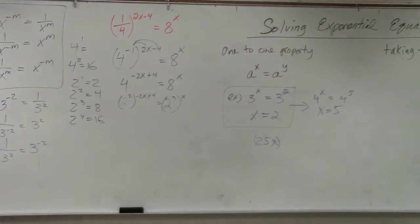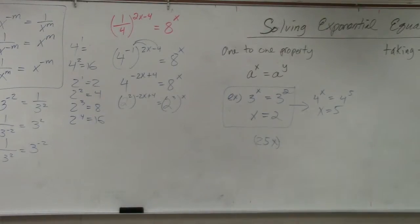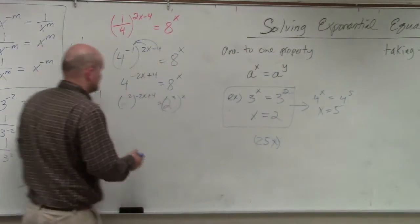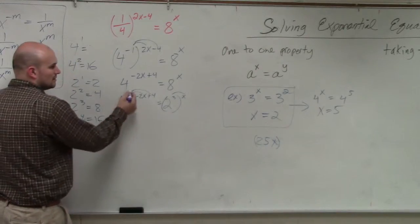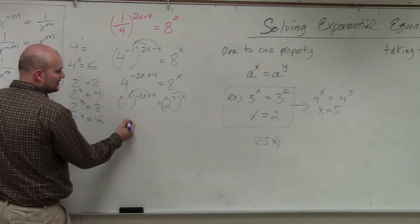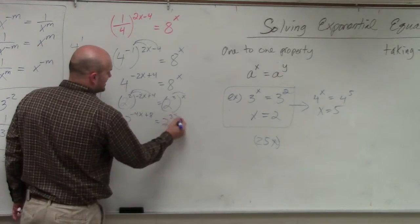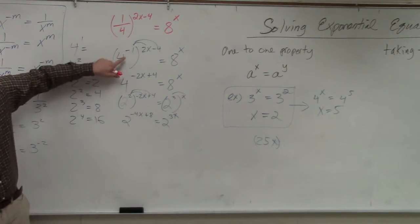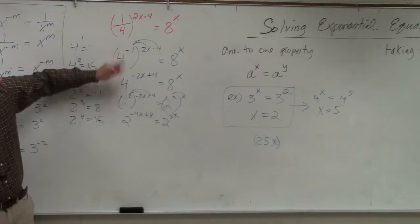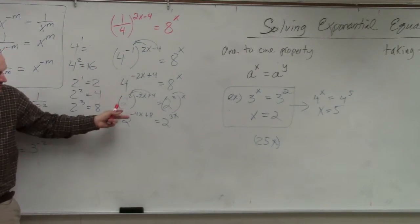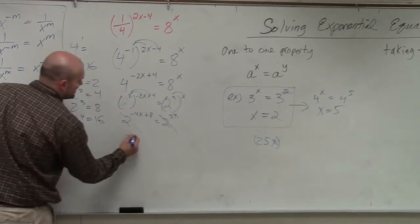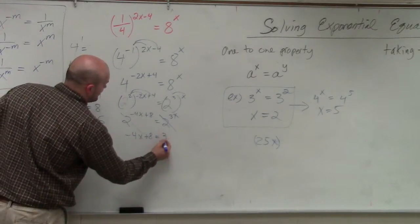The vision is to get two exponents with a base of 2, because once I have two exponents with a base of 2, I can apply the 1-to-1 property. Whenever you have an exponent raised to another exponent, you distribute — so this is 2 to the negative 4x plus 8 equals 2 to the 3x. By rewriting these both as a base of 2, I can now say negative 4x plus 8 is equal to 3x.